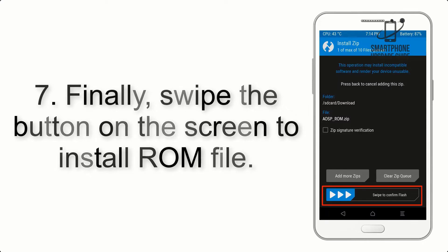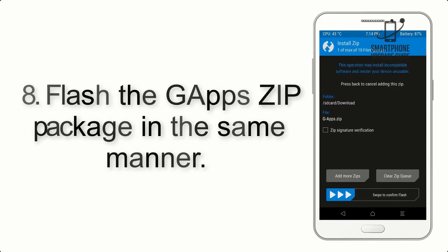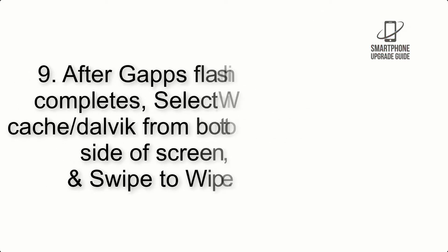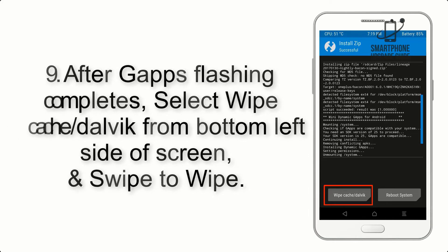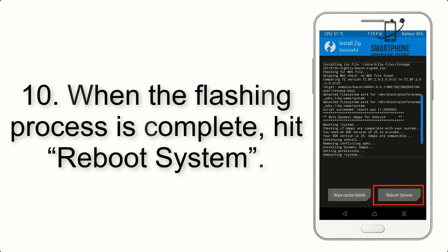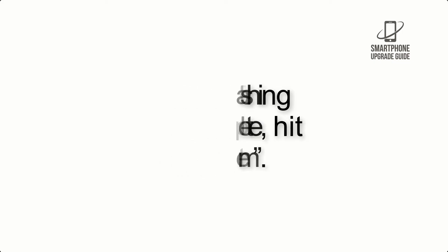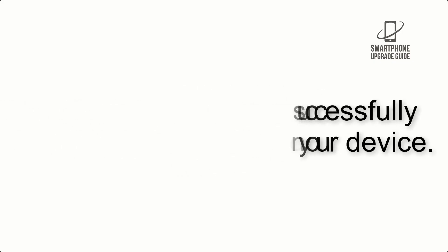Step 7: swipe the button on the screen to install the ROM file. Step 8: flash the GApps zip package in the same manner. Step 9: after GApps flashing completes, select Wipe Cache and Dalvik from the bottom left side of the screen and swipe to wipe. Step 10: when the flashing process is complete, hit Reboot System. That's it — you have successfully installed the ROM on your device.